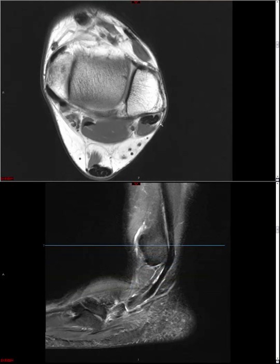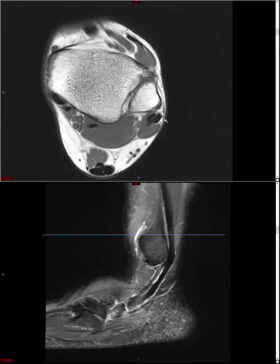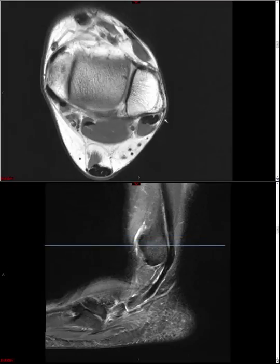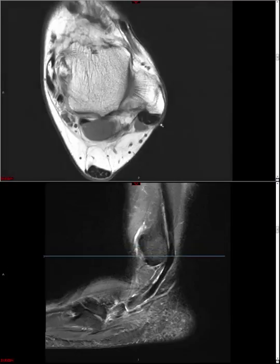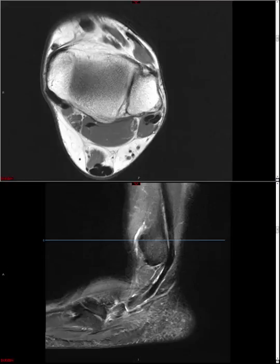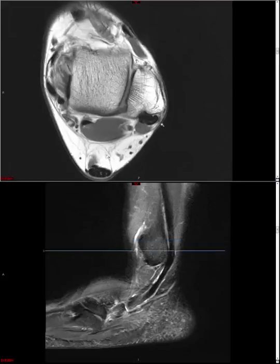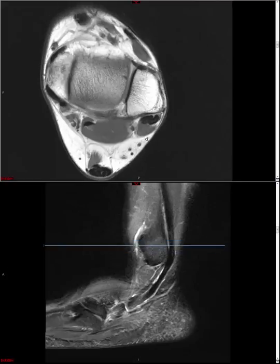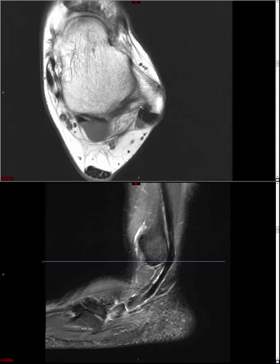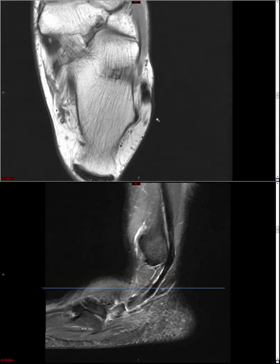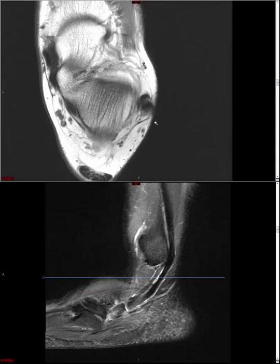Notice this thin band — this is the superior peroneal retinaculum. You may recall the plain film appearance of a fleck fracture of the distal fibula — that is basically an avulsion fracture of the superior peroneal retinaculum. If you see thickening of the SPR, you should also look for peroneal tendon subluxation.